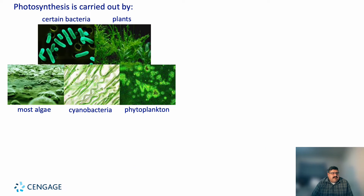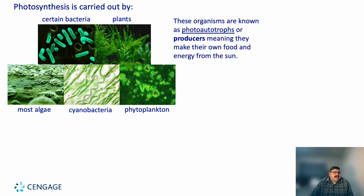Photosynthesis is carried out by a wide range of organisms — certain bacteria, most plants, algae found in the ocean, cyanobacteria, and phytoplankton. Phytoplankton is all over the ocean and is actually how we produce most of the energy we need. These organisms are known as photoautotrophs or producers, meaning they make their own food and energy from the sun.